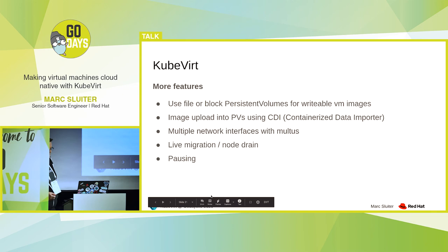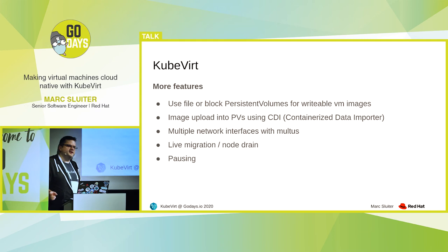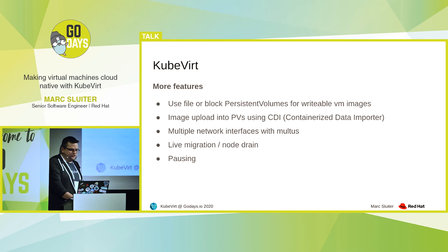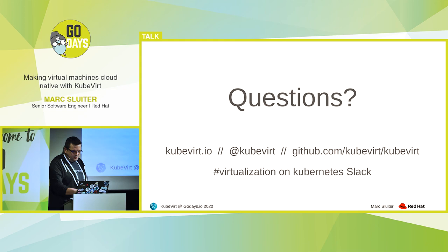Some more KubeVirt features I'd like to mention: you can also use persistent volumes, file or block-based, for writable VM images. Because the images fetched from Docker Hub are not writable — they are stateless. You can use the CDI project, the Containerized Data Importer, for uploading VM images into your persistent volumes. I already mentioned that you can define a more complicated network setup with Multus — you can even define multiple network interfaces. We also support live migration, which is useful when you need to drain a node. And you can pause a VM. In future you can also create snapshots. But we try to use as much Kubernetes features as we can rather than implementing everything on our own.